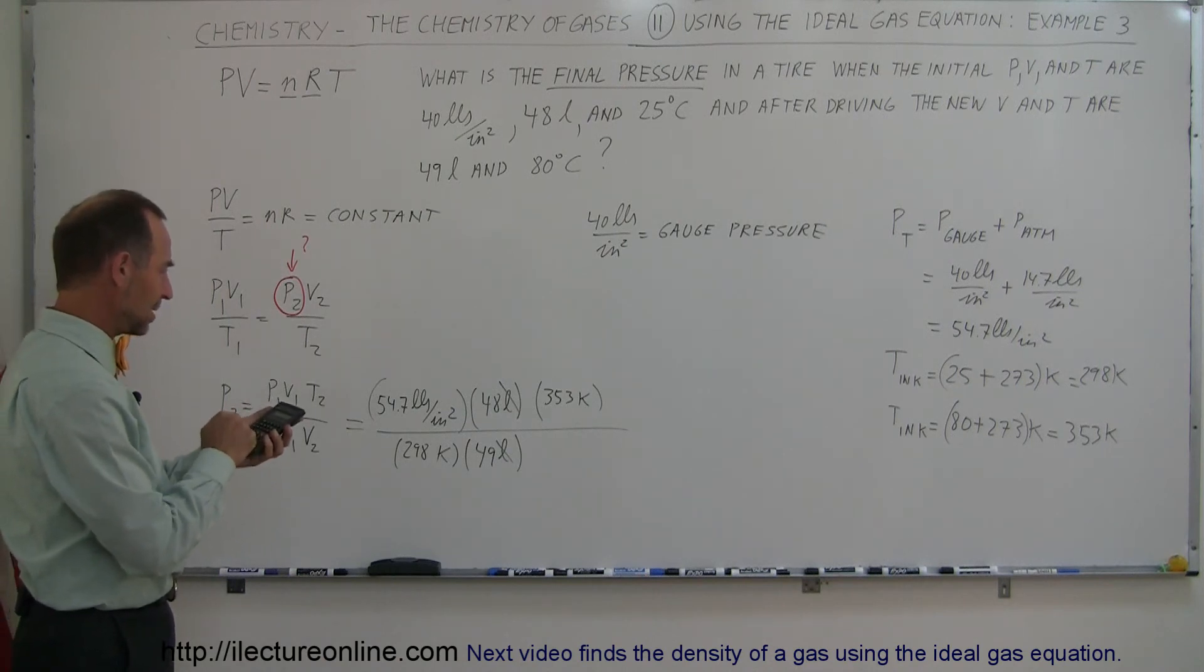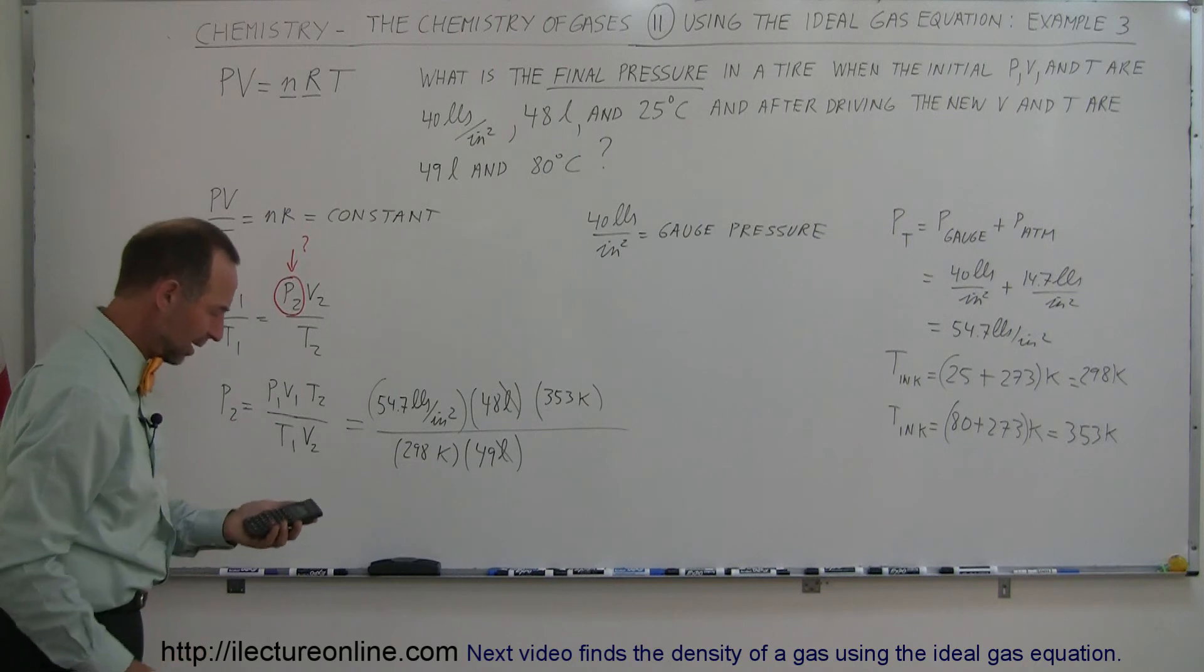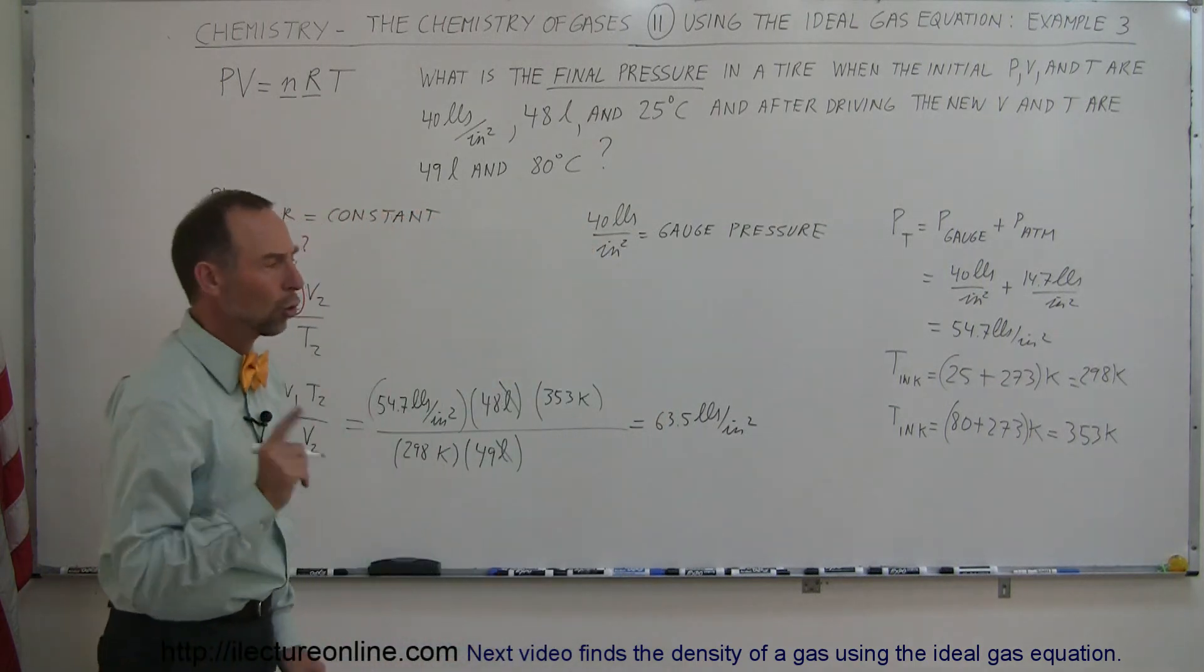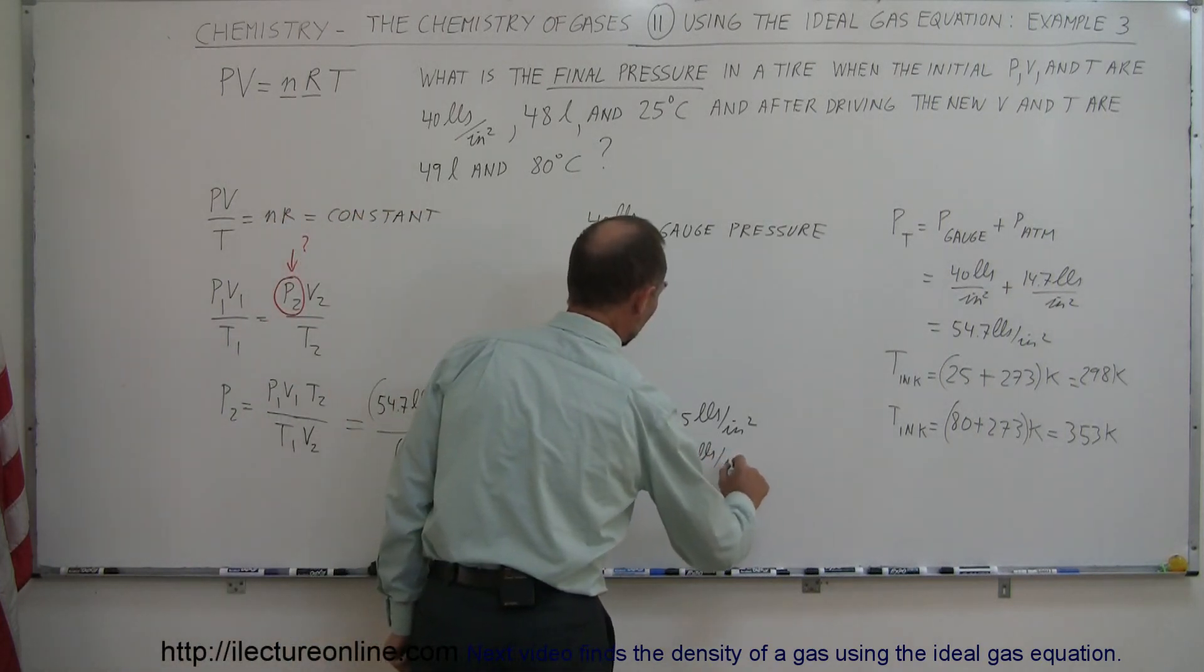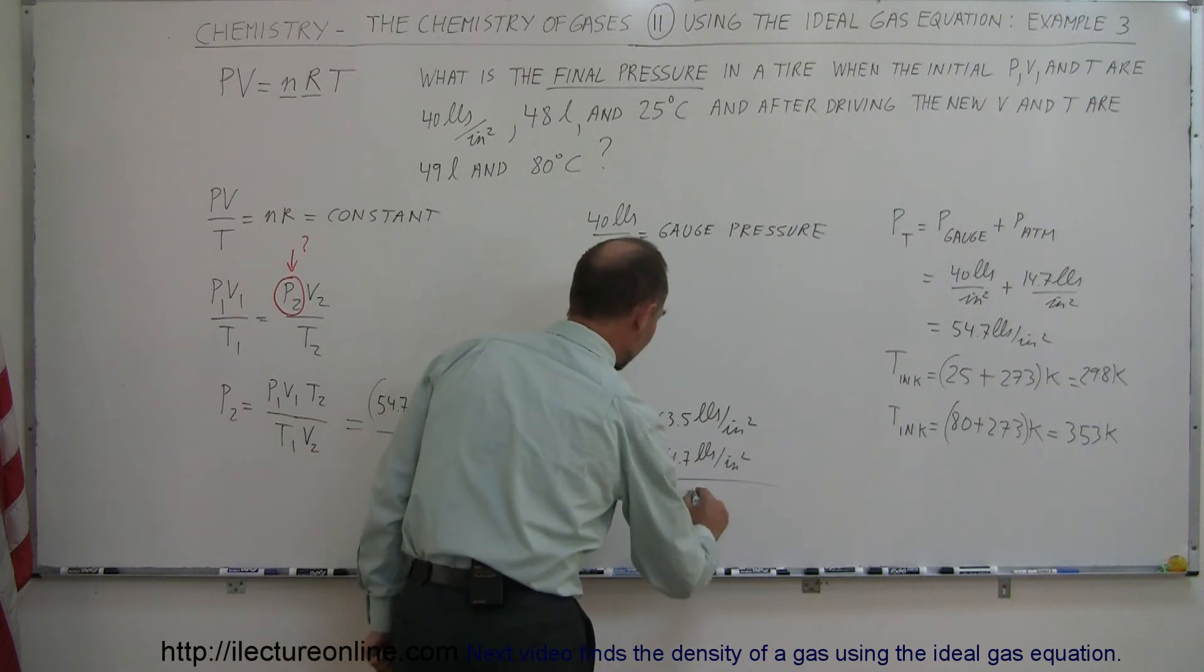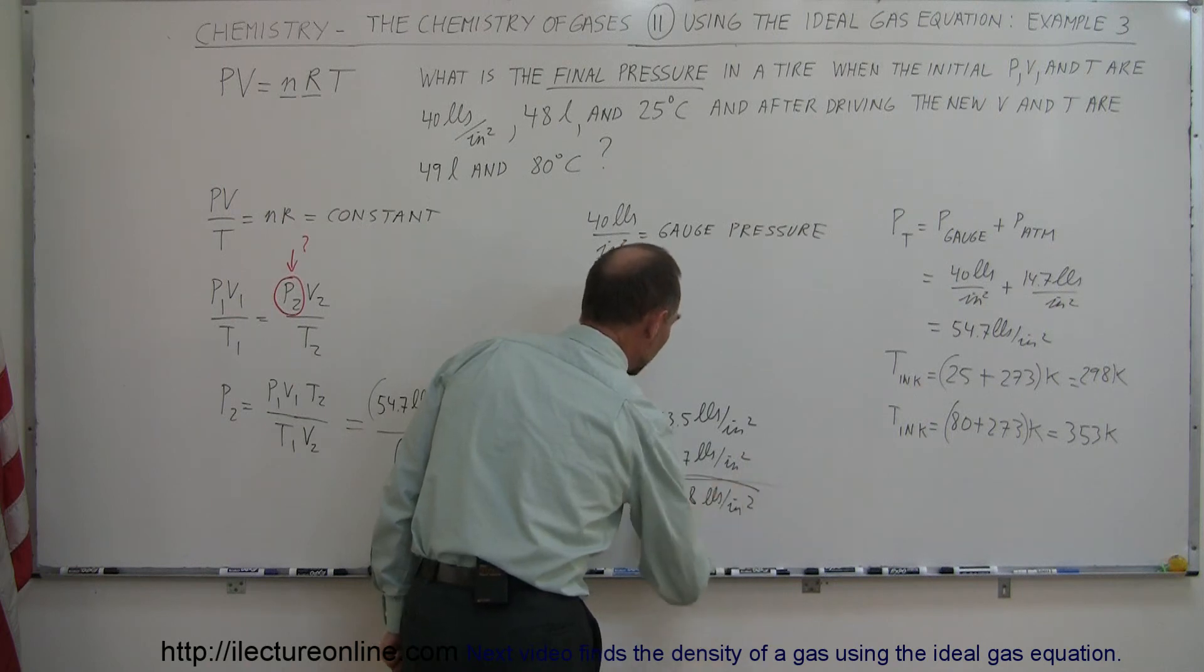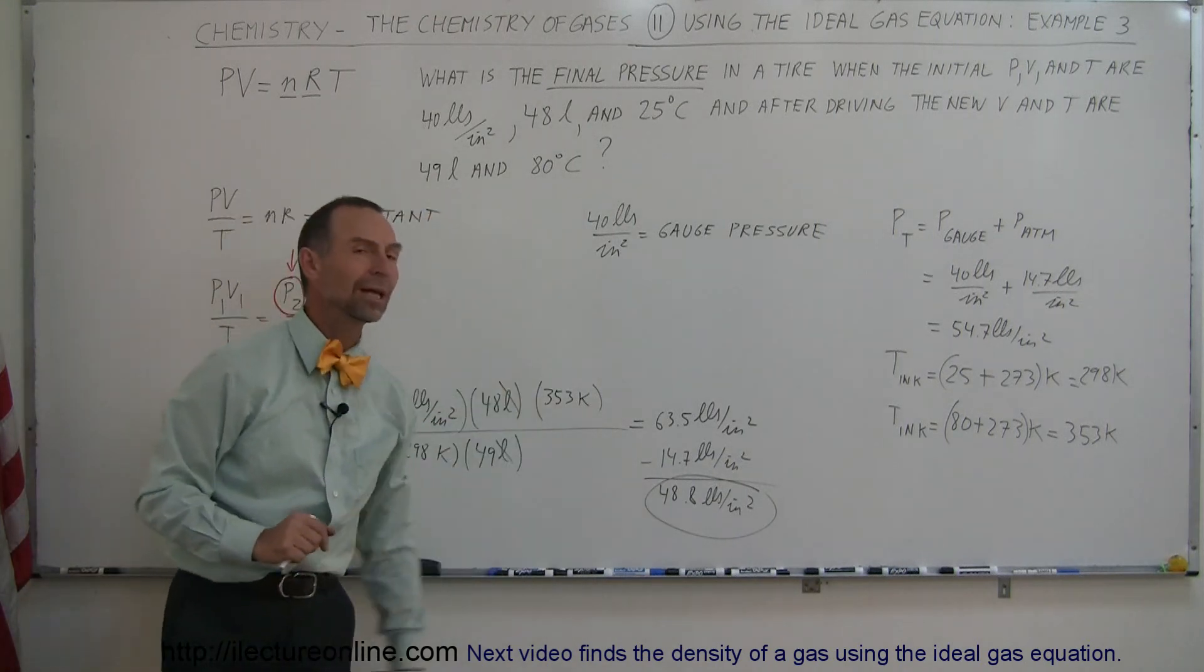So let's do this again, 54.7 times 48 times 353 divided by 298 divided by 49 equals 63.5. So this is equal to 63.5 pounds per square inch, but notice that is the total pressure. If we want to go back to gauge pressure, we have to subtract from that 14.7 pounds per square inch. Total pressure minus atmospheric pressure gives us gauge pressure, so that would be 48.8 pounds per square inch. That would be the new gauge pressure in the tire, when we started out at 40 pounds per square inch, we ended up at 48.8 pounds per square inch.